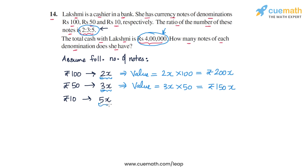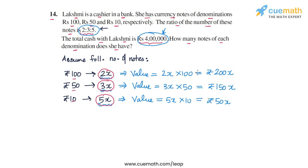Finally, there are 5x notes of rupees 10, so the total value of these notes will be 5x × 10, or rupees 50x. To summarize: we assumed the number of notes of the three denominations are 2x, 3x, and 5x, and calculated their rupee values as 200x from the 100-rupee notes, 150x from the 50-rupee notes, and 50x from the 10-rupee notes.